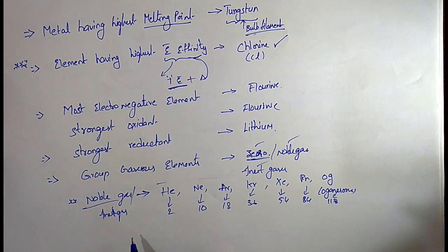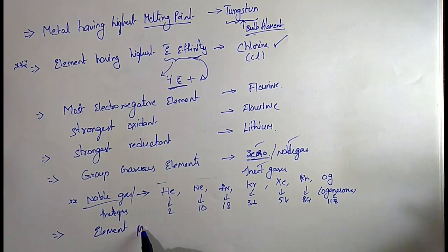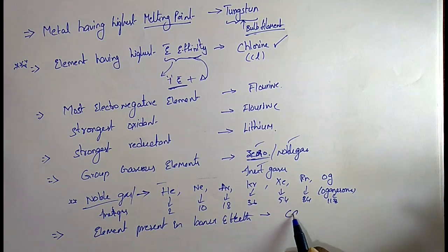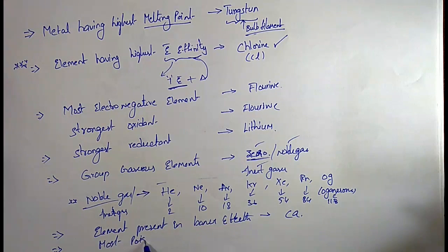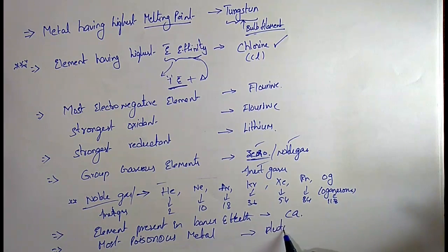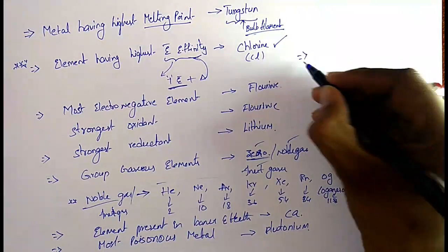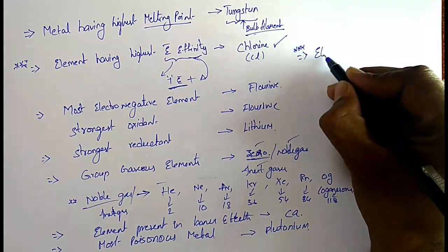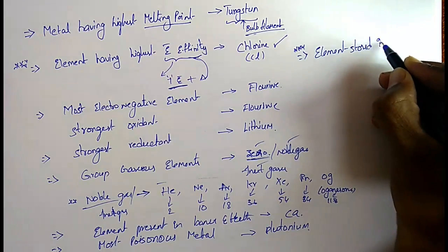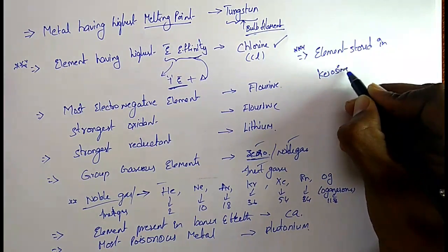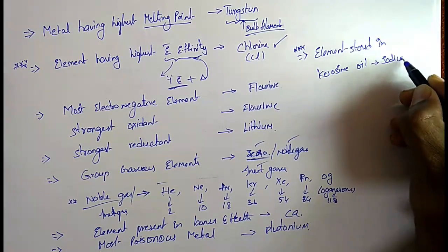The element present in bones and teeth is calcium. The most poisonous metal is plutonium. And a very important one: the element stored in kerosene oil is sodium.